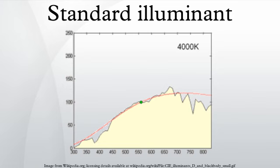Illuminants D represent phases of daylight, Illuminant E is the equal energy illuminant, while Illuminants F represent fluorescent lamps of various composition.